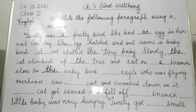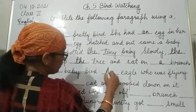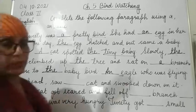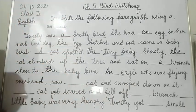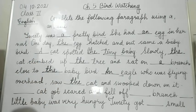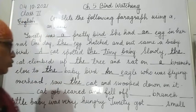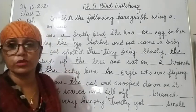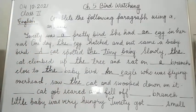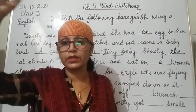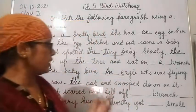Sat on a branch close to the baby bird. An eagle - why 'an eagle'? Because 'e' is a vowel and eagle is one, so 'an eagle'. An eagle who was flying overhead - overhead means flying above, circling above the tree. Saw the cat - it also saw that cat. The eagle swooped down on it - swooped means to come down fast. The eagle swooped down to catch the cat.